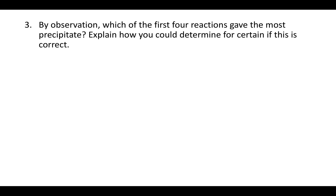Question three says: by observation, which of the first four reactions gave the most precipitate? Explain how you could determine for certain if this is correct. This is really two questions. The first one — which reaction gave the most precipitate — is something you would have had to observe in the lab when you performed the experiment. If you didn't observe that during the experiment, there's no way to figure out the answer; that's something you could only get by observation in the lab.